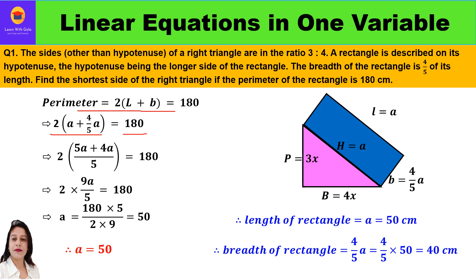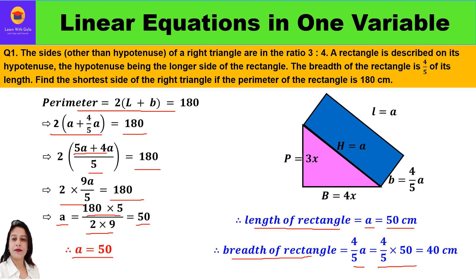Taking LCM of 5: (5a + 4a)/5 = 9a/5, so 2 × 9a/5 = 180. Cross multiplying, a = 180 × 5 / (2 × 9), which simplifies to 50. So the value of 'a' — the length — is 50 centimeters. And the breadth of the rectangle is 4/5 of 50, which is 40 centimeters.